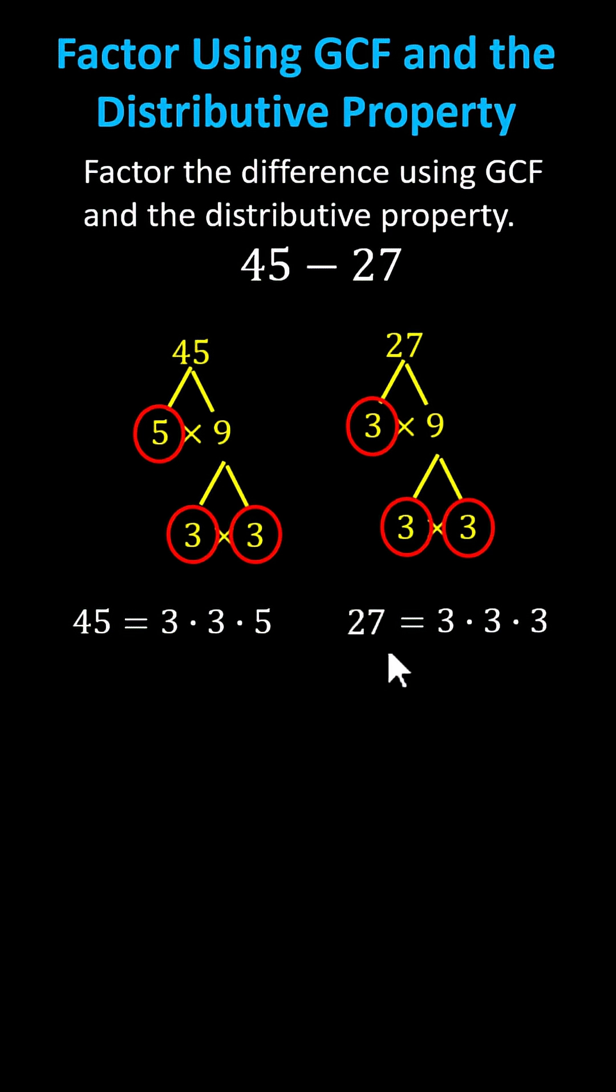To determine the greatest common factor, we circle the prime factors 45 and 27 have in common. Notice both 45 and 27 have two factors of 3 in common. This indicates the greatest common factor is 3 times 3, which equals 9.